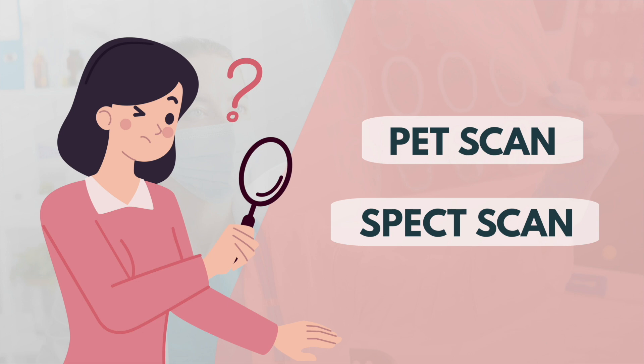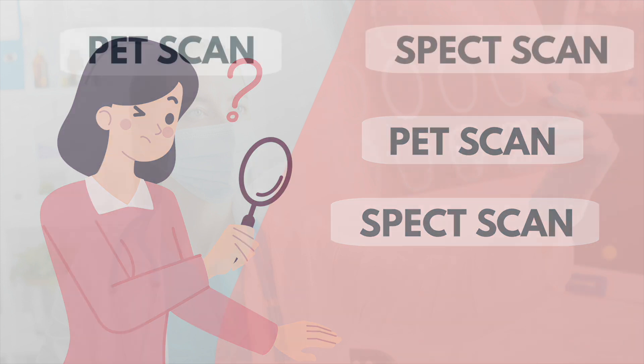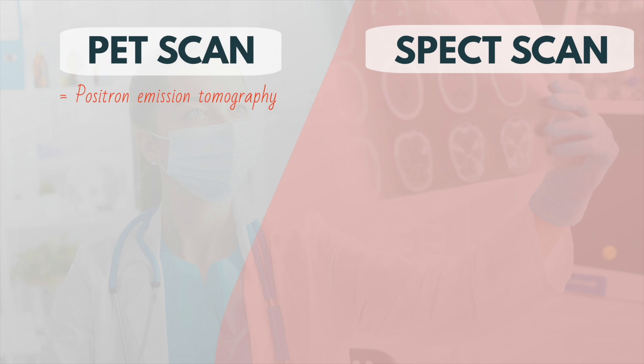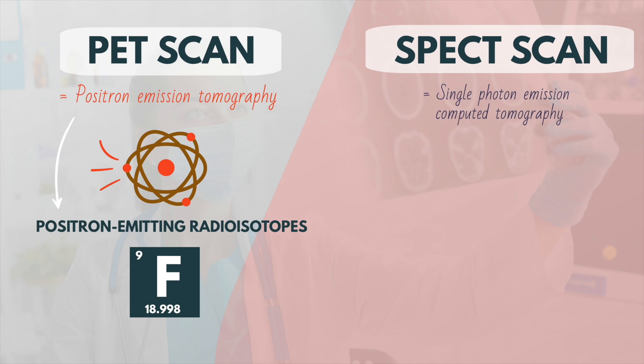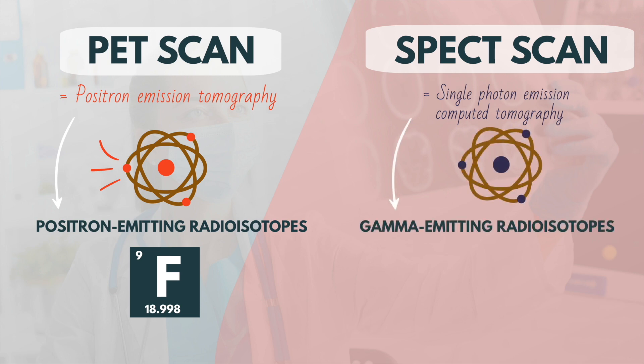But what are PET and SPECT scans exactly? PET stands for positron emission tomography and uses positron-emitting radioisotopes. The most commonly used radioisotope is fluorine-18. SPECT, on the other hand, stands for single-photon emission tomography and uses gamma-emitting radioisotopes. The most commonly used radioisotope is technetium.